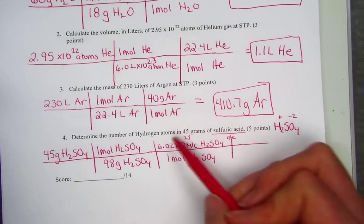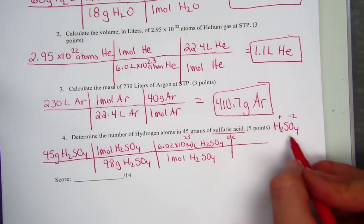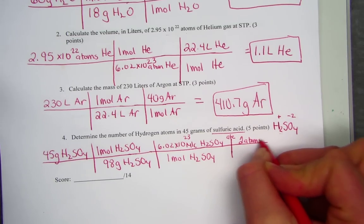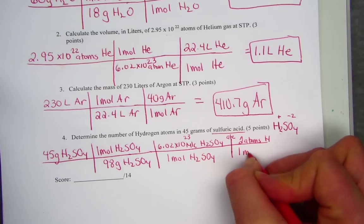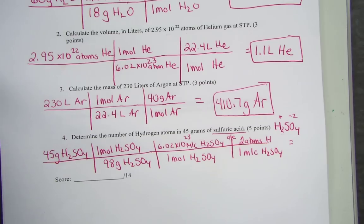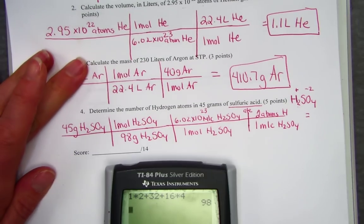But we're not done. We want hydrogen atoms. Right now we're at molecules of acid. If I peek inside that formula, I count two hydrogens. There's two atoms of hydrogen in every one molecule of acid. Finally, we've canceled to find the hydrogen atoms. Step one: divide by molar mass. Step two: multiply by Avogadro. Step three: double that to turn it into hydrogens.